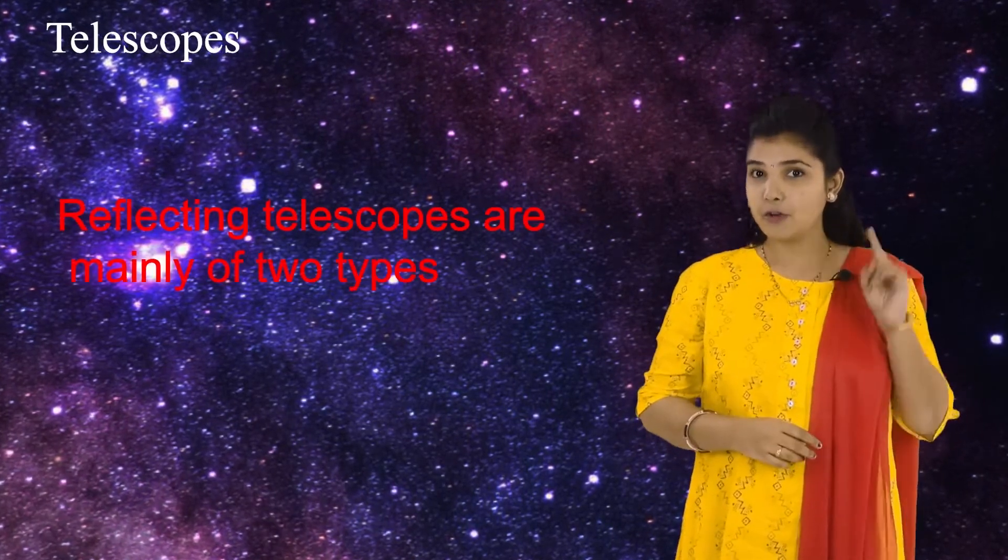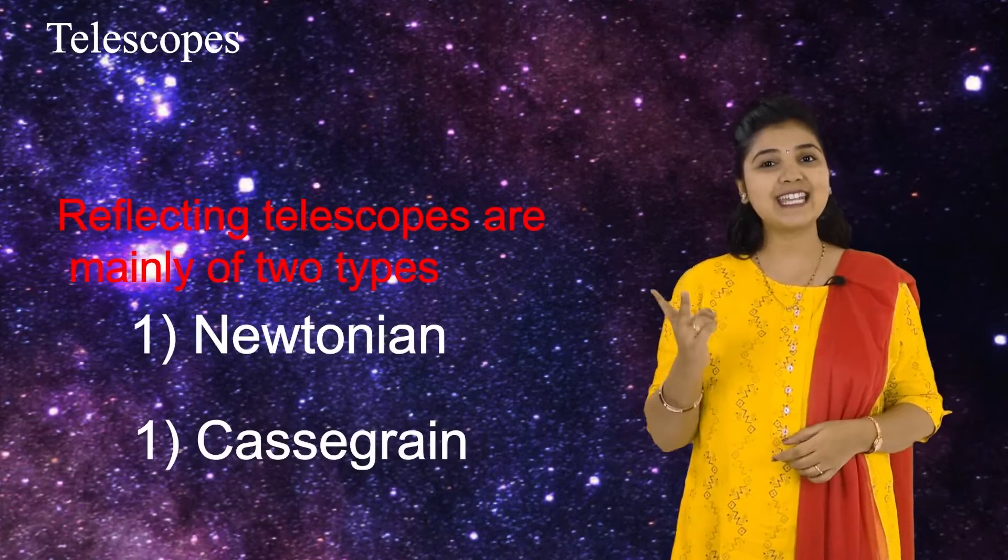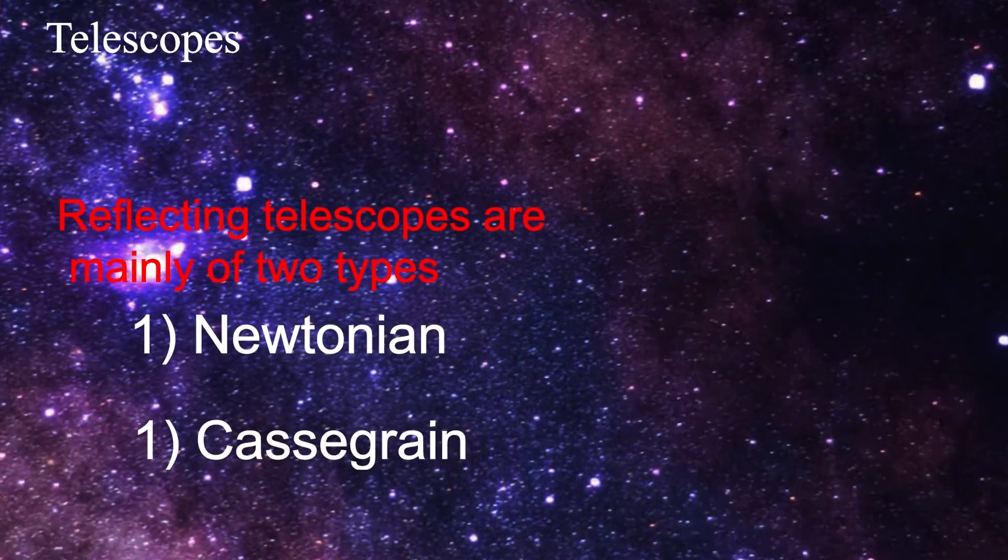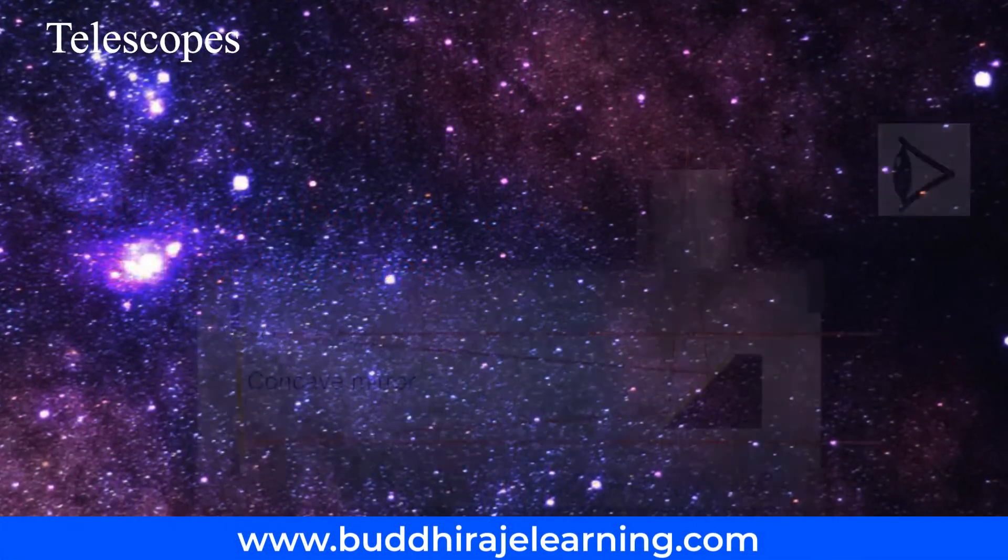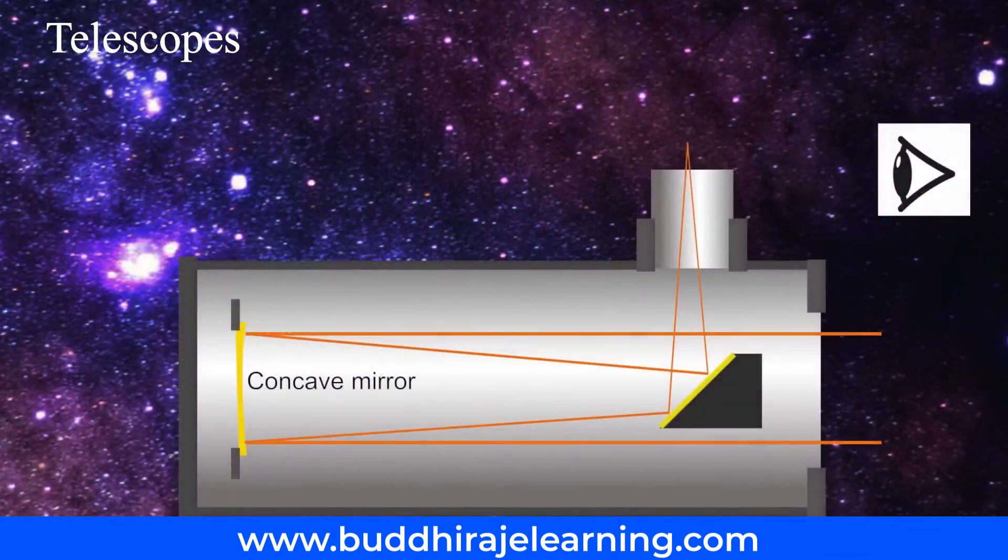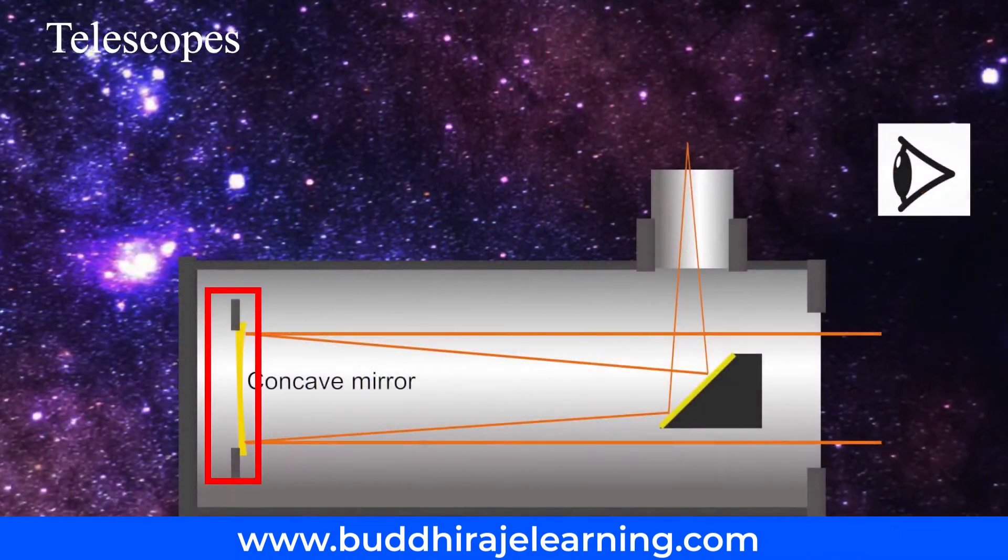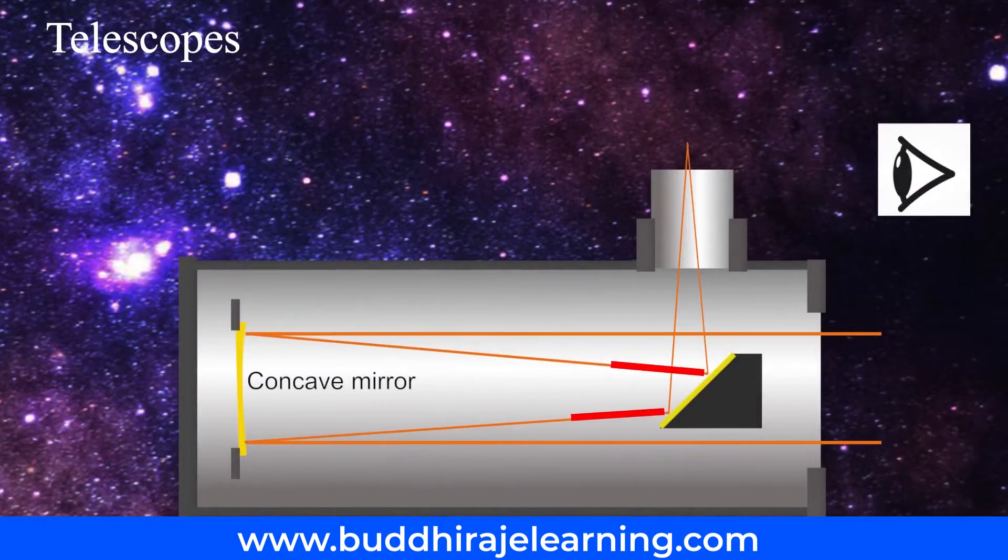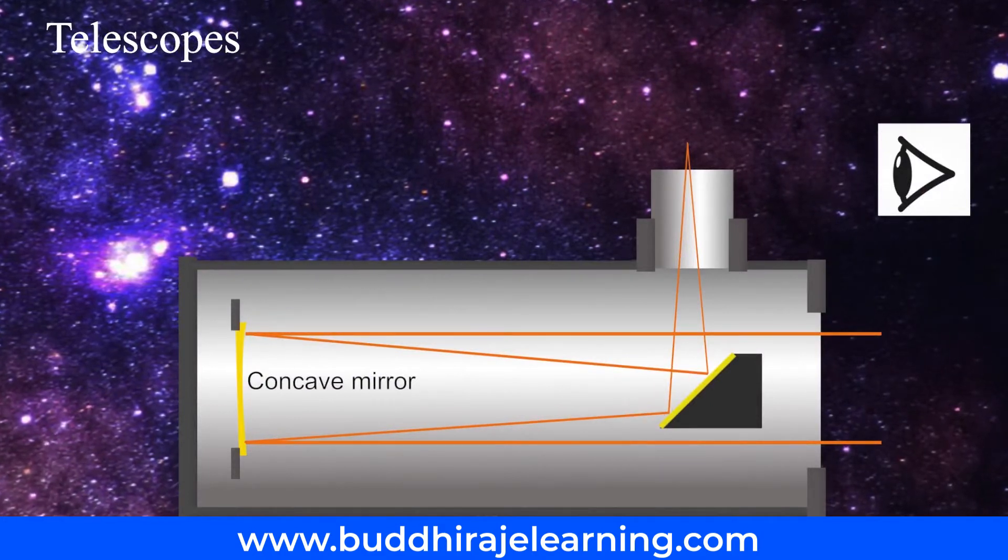Students, the reflecting telescopes are mainly of two types. First is Newtonian and second is Cassegrain type. Students, this is a Newtonian telescope. A concave mirror is used here. The reflected rays converge at the focus. We have studied about this element in the previous standard.